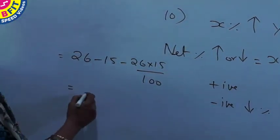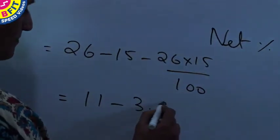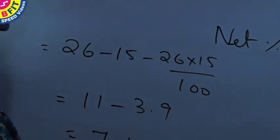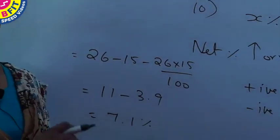Which is equal to 11 minus 3.9, so the shopkeeper had gained by 7.1 percent in spite of giving a 15 percent discount.